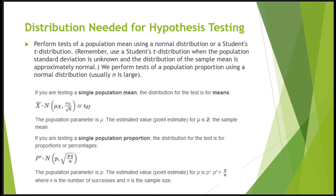If you're testing a single population mean, the distribution for the test is for means, and the population parameter is mu. The point estimate for mu is x-bar, which is the sample mean. If you're testing a single population proportion, the population parameter is p, and the point estimate for p is p-prime.